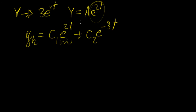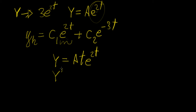In that case, we would need to choose a different function. Instead of a·e^(2t), we would choose Y = a·t·e^(2t). If the function is repeated in the homogeneous solution, we multiply our guess by t, then find its derivatives using the product rule, substitute back into the differential equation, and solve for a. The final solution would then have a term t·e^(2t) with some coefficient.